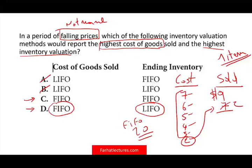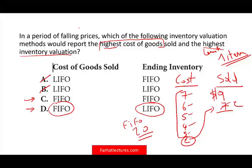Notice I would never try to memorize this, because they can ask the question in so many different ways — rising prices instead of falling, or the lowest instead of the highest. The best approach is to take a moment, make sure you understand how FIFO and LIFO work, and jot down some simple numbers like I just did. With falling prices and one item sold for $9, FIFO gives the highest cost and LIFO gives the highest inventory.